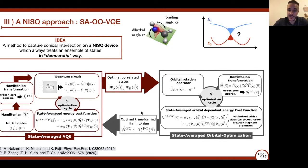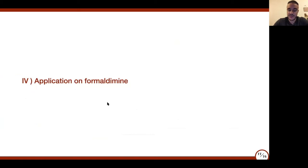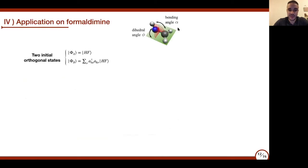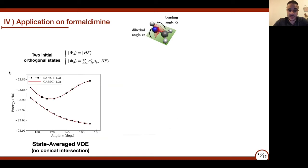Let me now give an application of this approach on the formaldimine molecule. The two initial orthogonal states are the Hartree-Fock determinant and a singlet excited version of the Hartree-Fock determinant. After using only the state-average VQE—without any state-average orbital optimization—I observe that our approach (in black) has very good correspondence with the CASCI approach (in red). However, because we do not use any state-average orbital optimization, we only match CASCI, and there is no conical intersection.